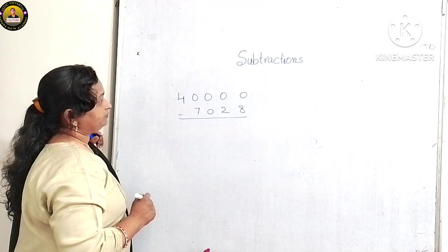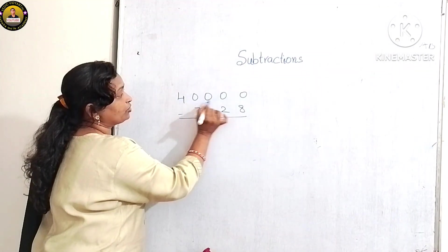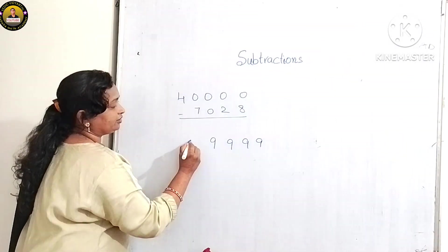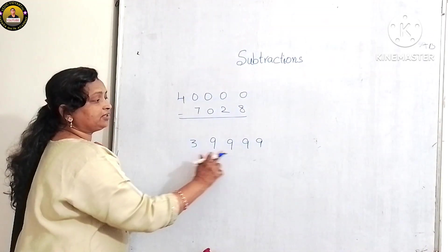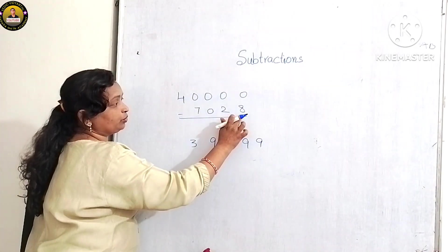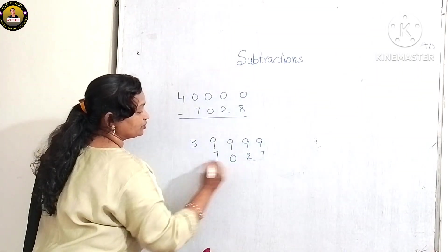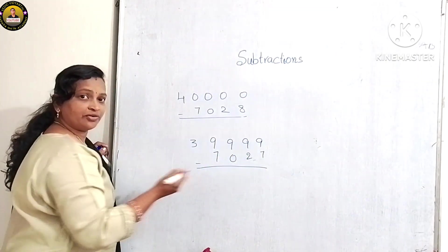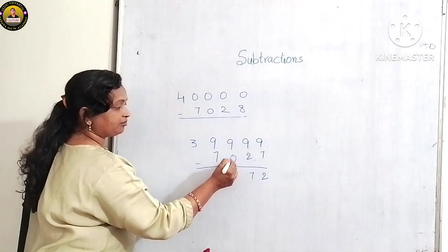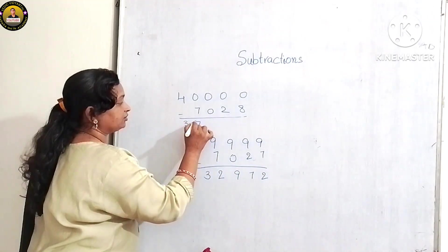Let us see this example: what is the predecessor of 40,000? Four zeros, so four nines — 39,999. Second number is 7,028. The predecessor of 7,028 is 7,027. Subtract: 9 minus 7 is 2, 9 minus 2 is 7, 9 minus 0 is 9, 9 minus 7 is 2. The final answer is 32,972.